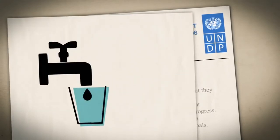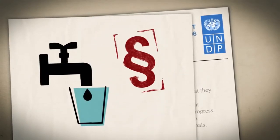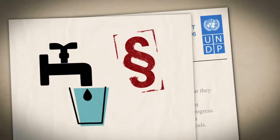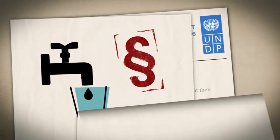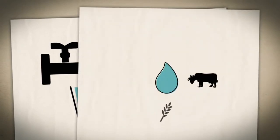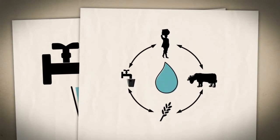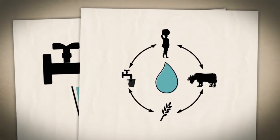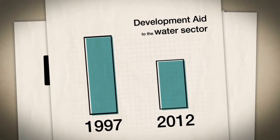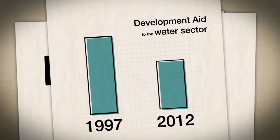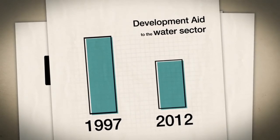Access to clean, fresh water has been given the status of a human right. Nevertheless, the water sector still has a relatively low political priority. Few developing countries have efficient water resource management. Since 1997, the annual share of global financial development aid spent on the water sector has fallen from eight to five percent.